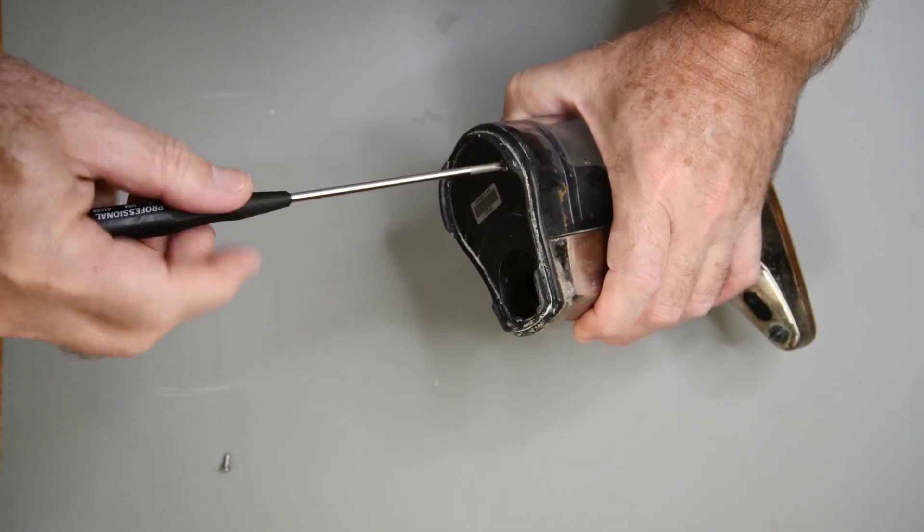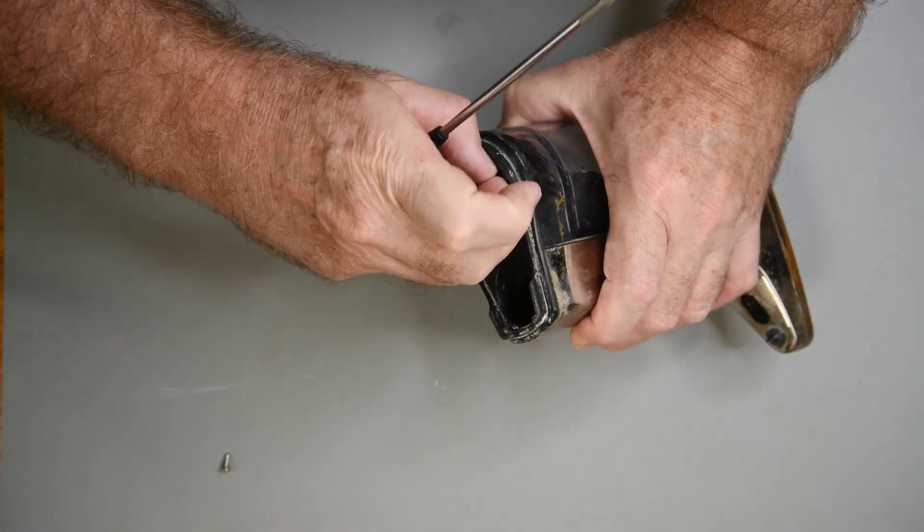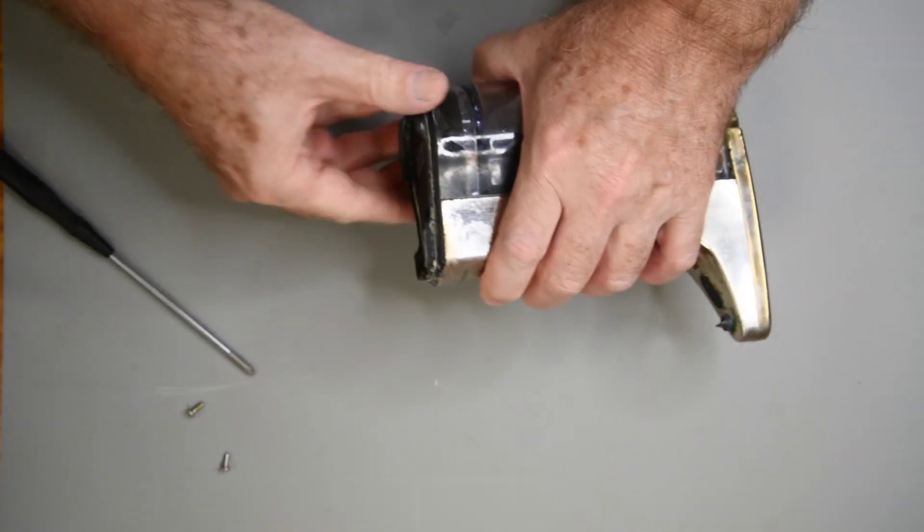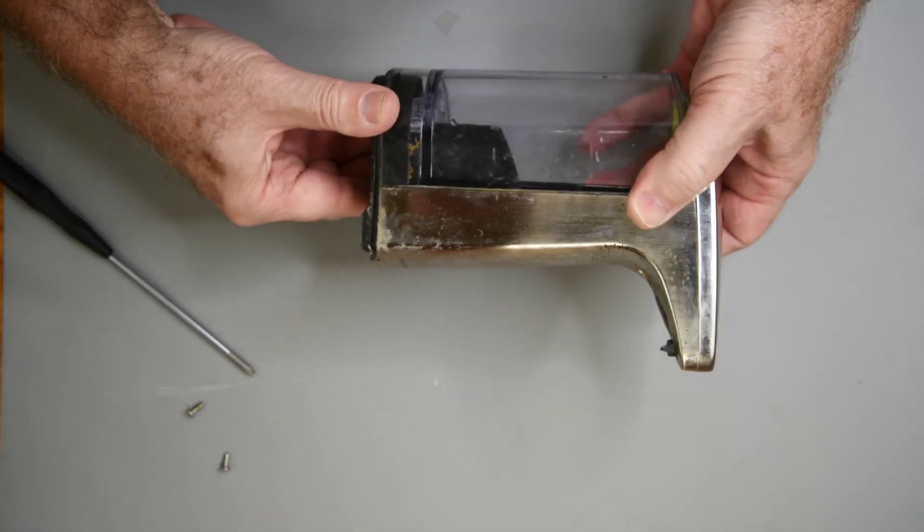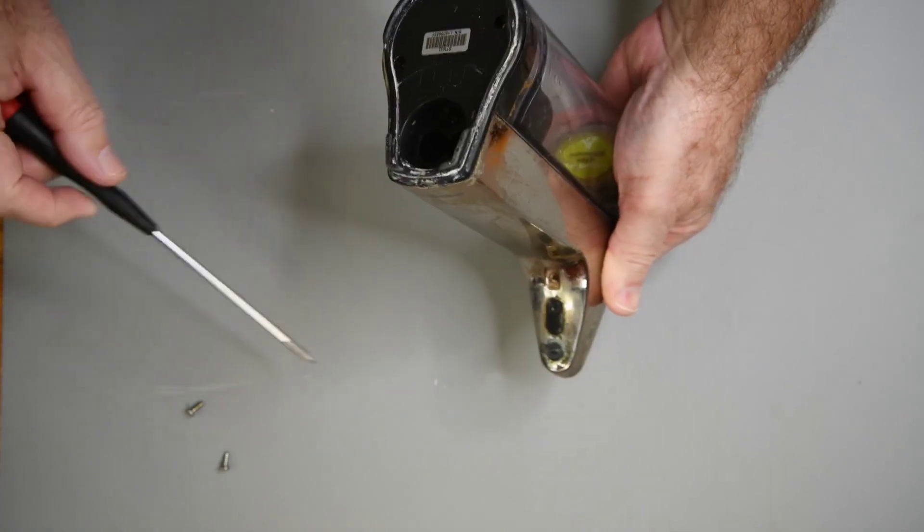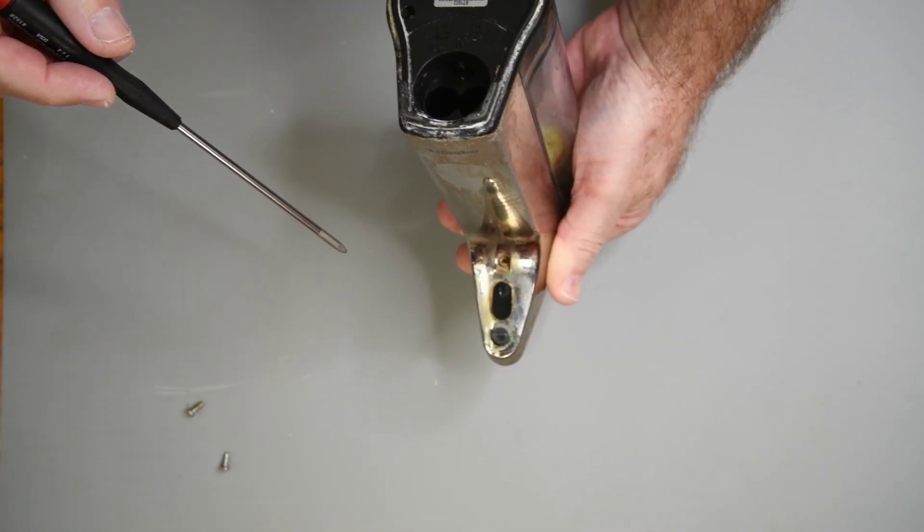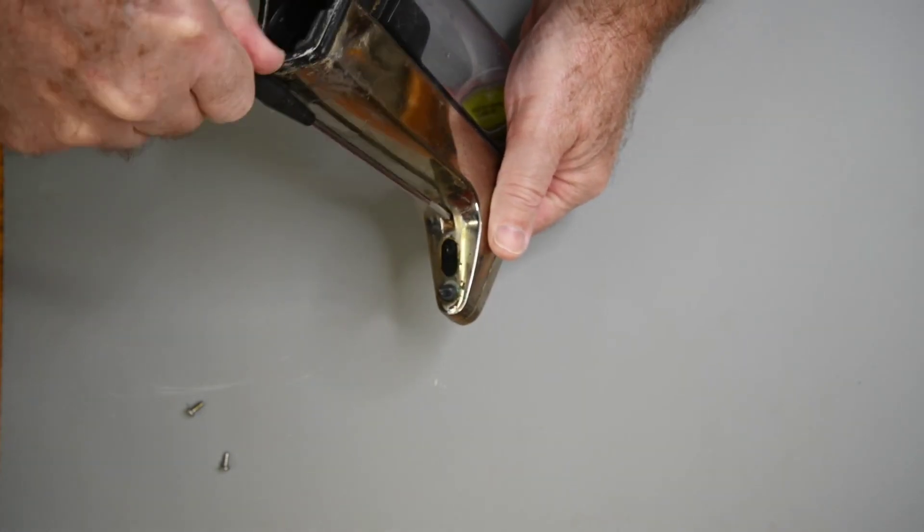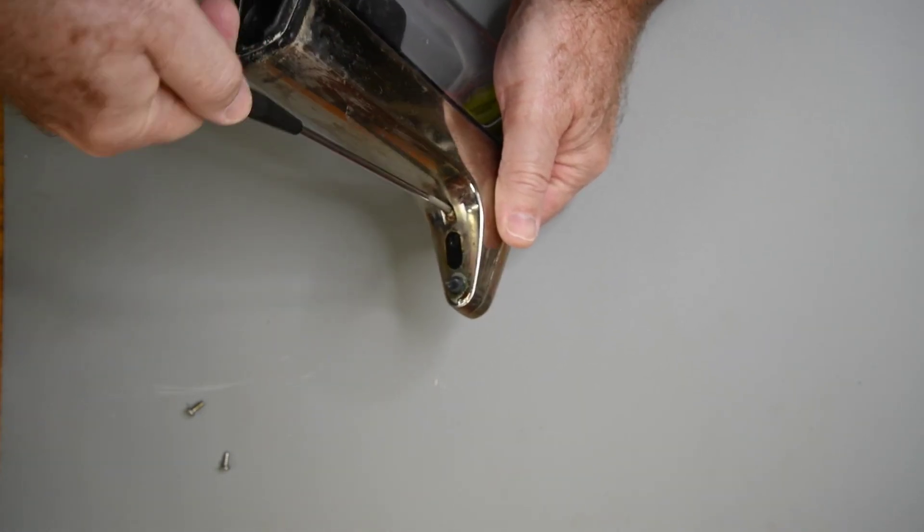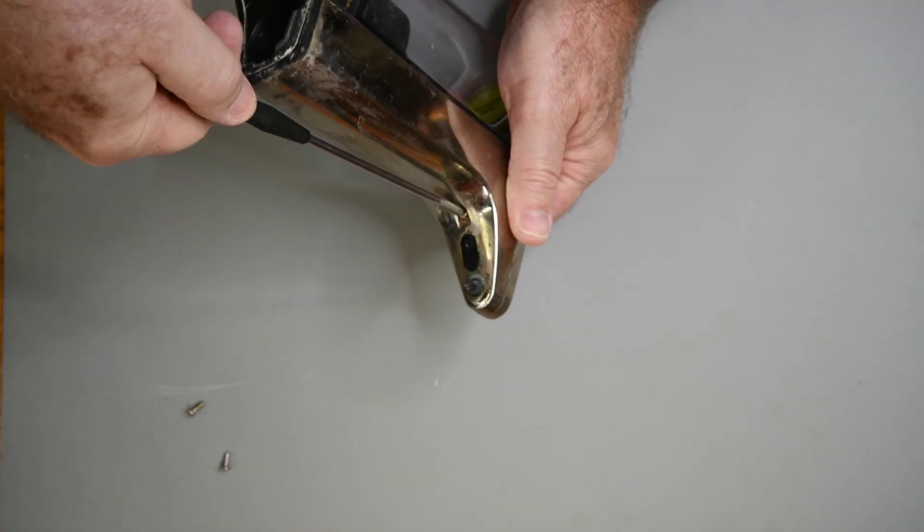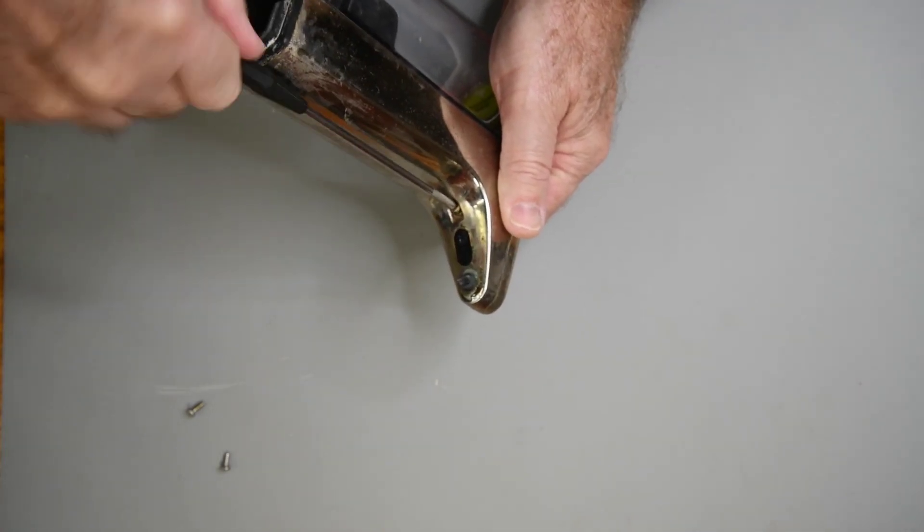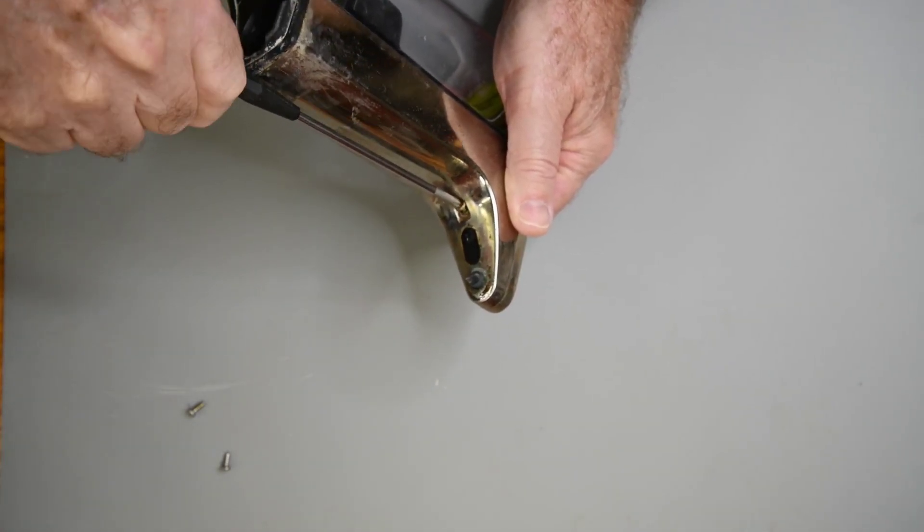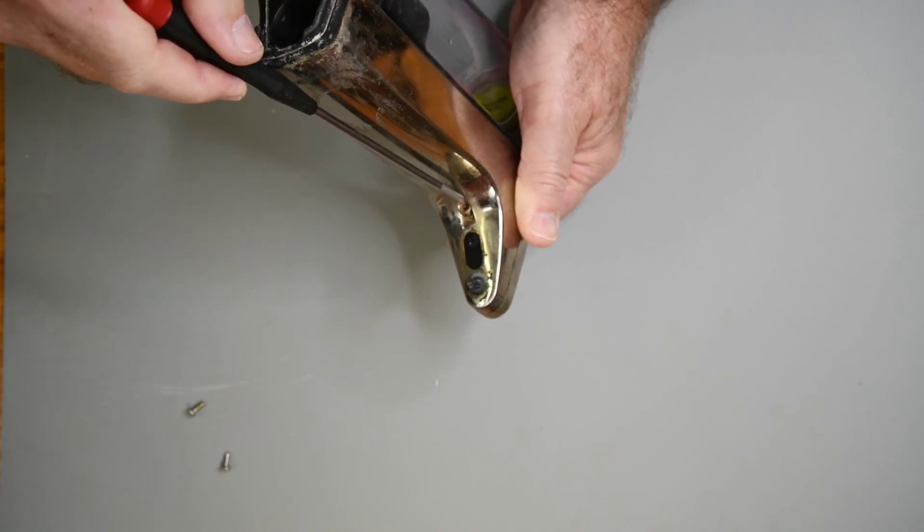I don't see but three screws. Two here on the bottom, and they are pretty short. And one tucked up under the neck. This one is very hard to turn. Seems like it's threaded in a long ways.